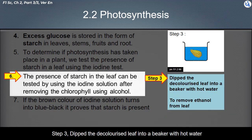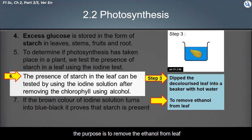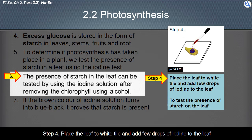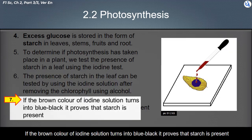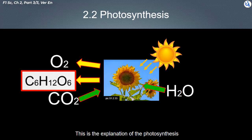Step 3: Dip the decolorized leaf into a beaker with hot water to remove the ethanol from the leaf. Step 4: Place the leaf on a white tile and add a few drops of iodine solution to the leaf to test for the presence of starch. If the brown color of the iodine solution turns blue-black, it proves that starch is present. This concludes the explanation of photosynthesis.